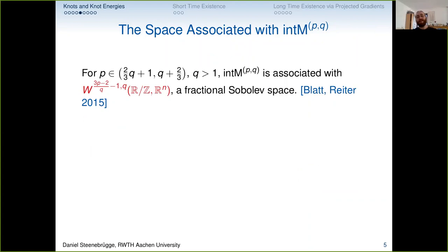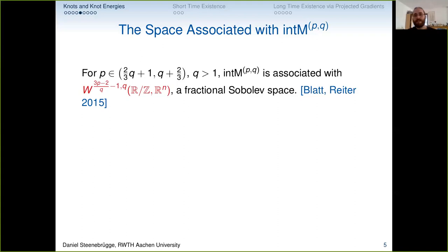For gradients you need a Hilbert space, because a gradient is simultaneously a direction and a differential — for that you need to identify these, and at a basic level this requires a Hilbert space. It turns out there is a Sobolev space associated to our energy, and sometimes it is a Hilbert space. For p in the interval (2/3·q+1, q+2/3) and q > 1, our energy is associated with a fractional Sobolev space with exponent between 1 and 2 and integrability q.